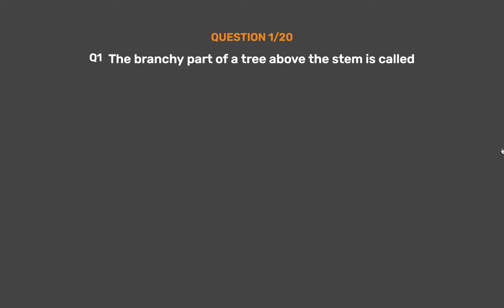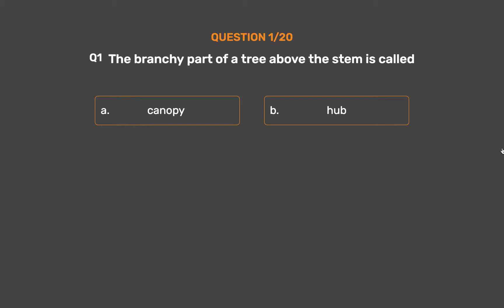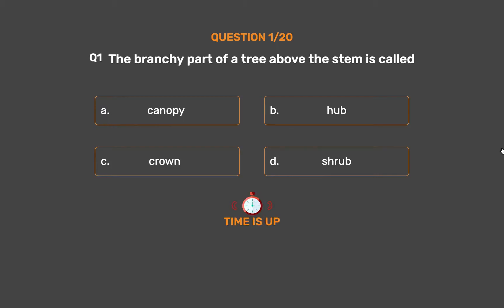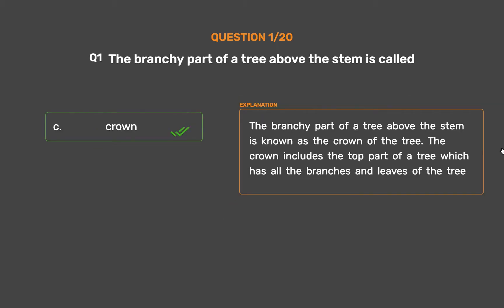Question number 1. The branchy part of a tree above the stem is called. Option A: Canopy. Option B: Herb. Option C: Crown. Option D: Shrub. The correct answer is Option C: Crown. The branchy part of a tree above the stem is known as the crown of the tree. The crown includes the top part of a tree which has all the branches and leaves of the tree.